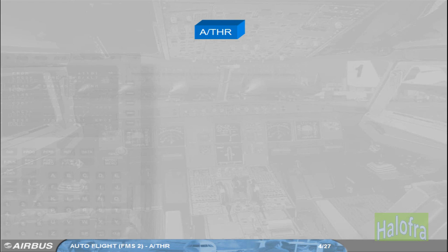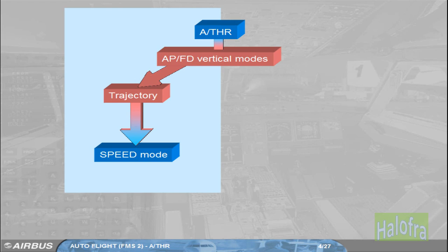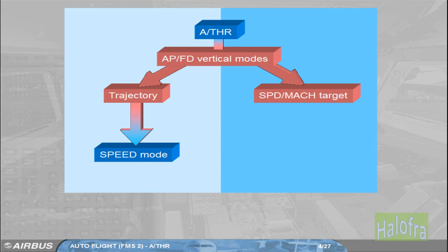The Autothrust modes are automatically linked to Autopilot Flight Director vertical modes. When the Autopilot Flight Director vertical mode controls a trajectory, e.g. altitude hold, vertical speed, or glide slope, the Autothrust is in speed mode. When the Autopilot Flight Director vertical mode adjusts the aircraft pitch in order to keep a target speed or Mach, e.g. climb or descent, the Autothrust is in thrust mode.